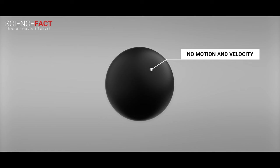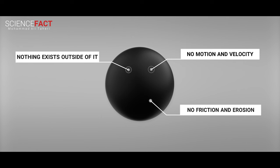As mentioned before, the cosmic black hole has no motion and velocity, and there is nothing outside of it to cause friction and erosion. Therefore, it can preserve mass and matter inside itself.